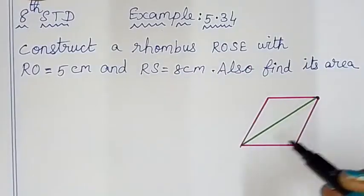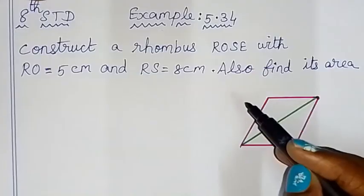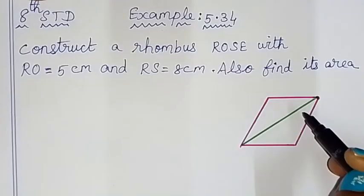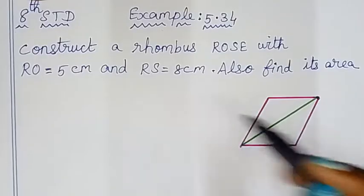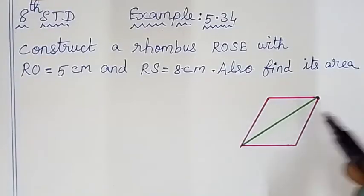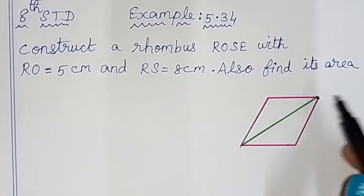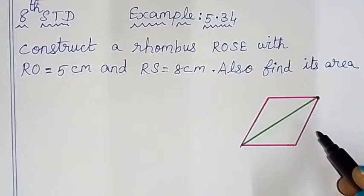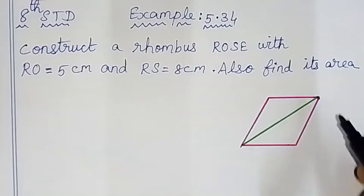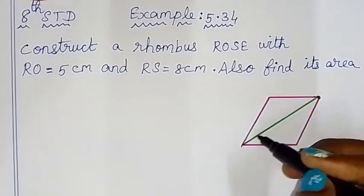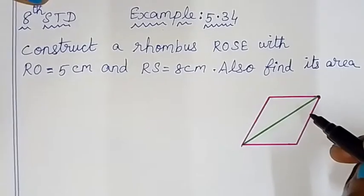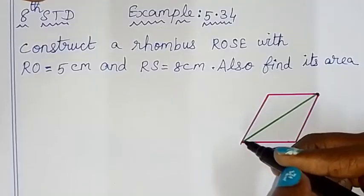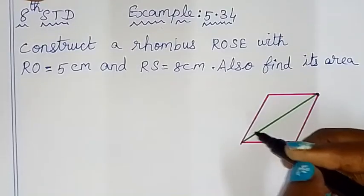A rhombus has all sides equal, like a square. All angles are equal, and the diagonals bisect each other at right angles. The diagonals also act as angle bisectors, dividing each angle into equal halves.